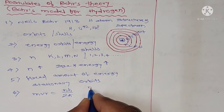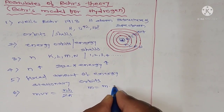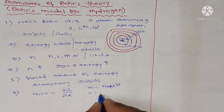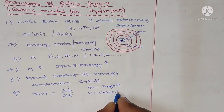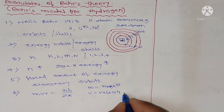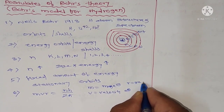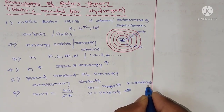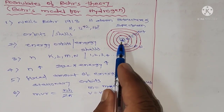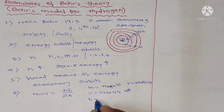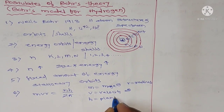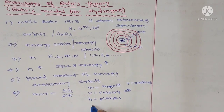Here, m is the mass of the electron, V is the velocity of the electron, r is the radius of the orbit, H is Planck's constant, and n is the orbit number.